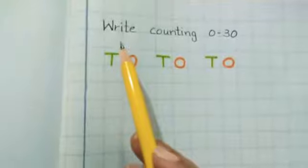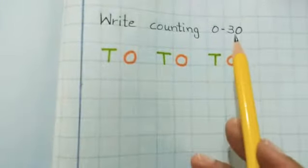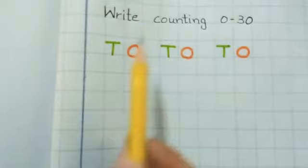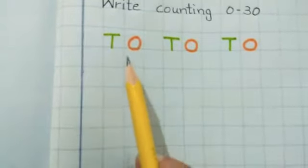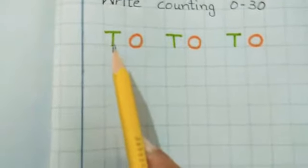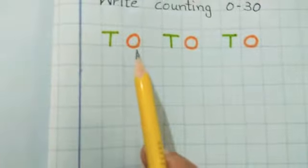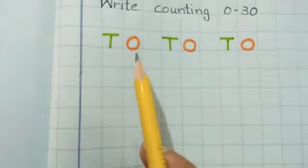What we have to do in it? Write counting 0 till 30. So we have to write counting 0 till 30. What is this beta? As we know, tens and ones. Tens and ones.